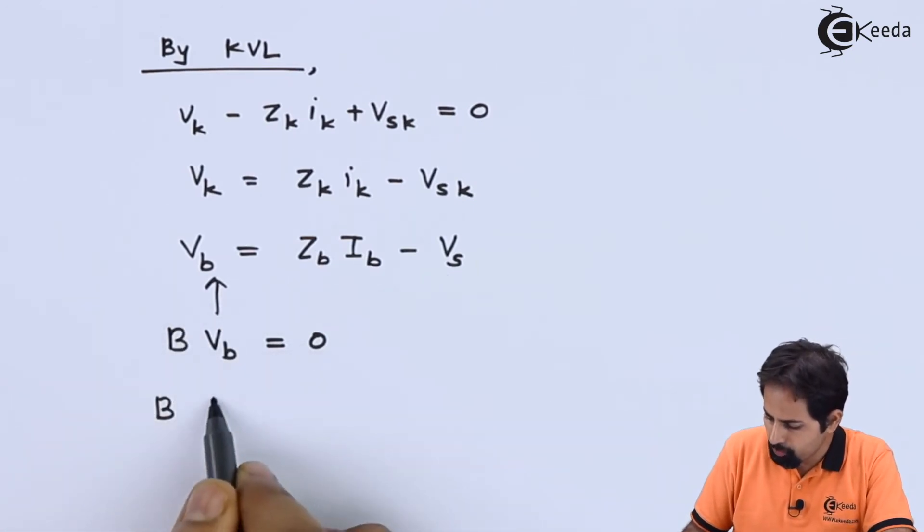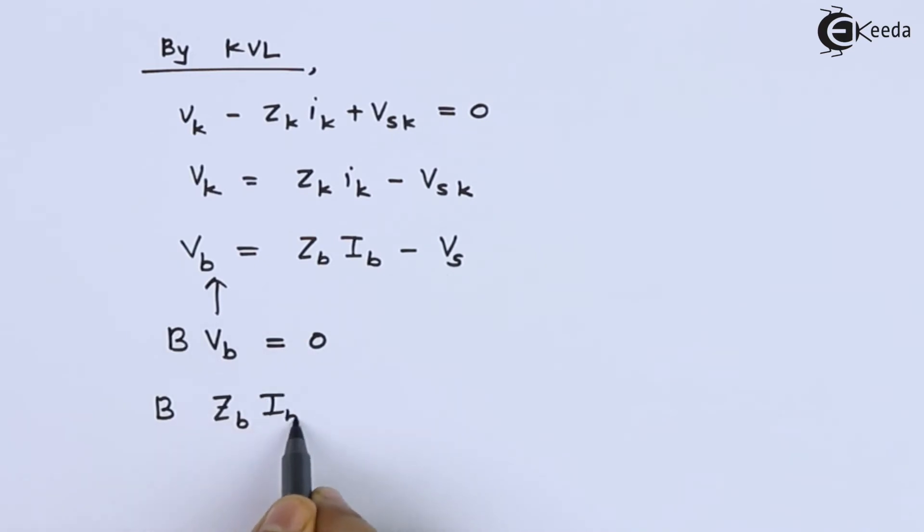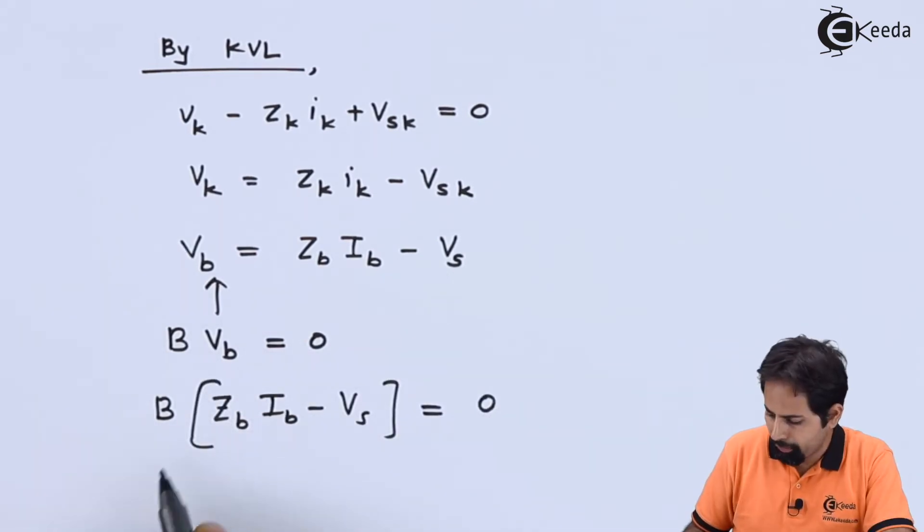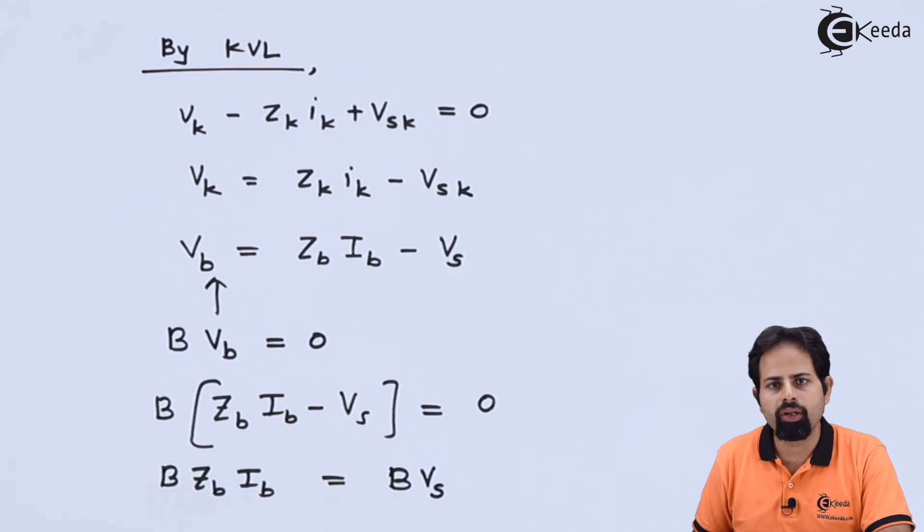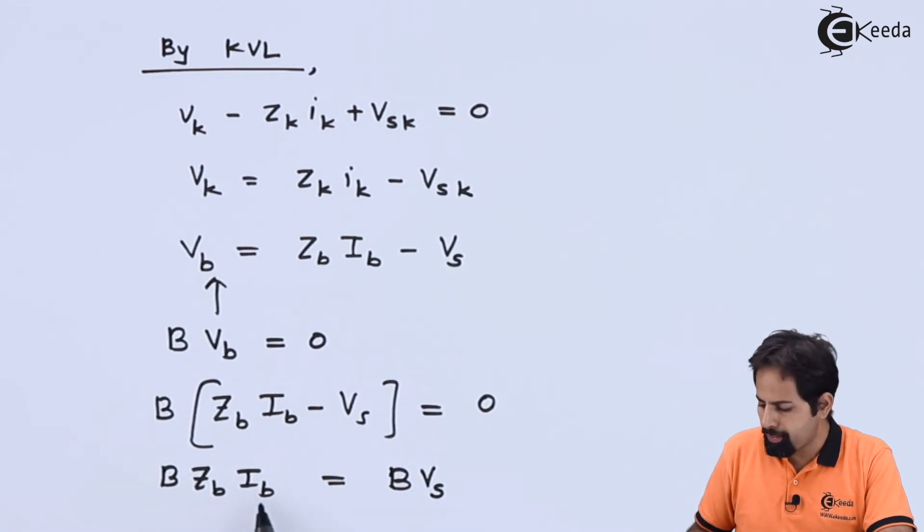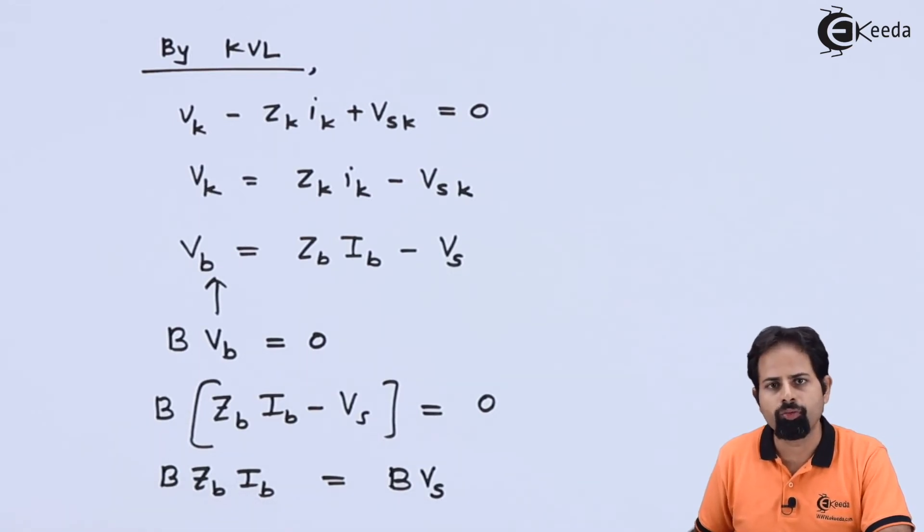So B into, will open the brackets. Now we have one more relation for this IB.